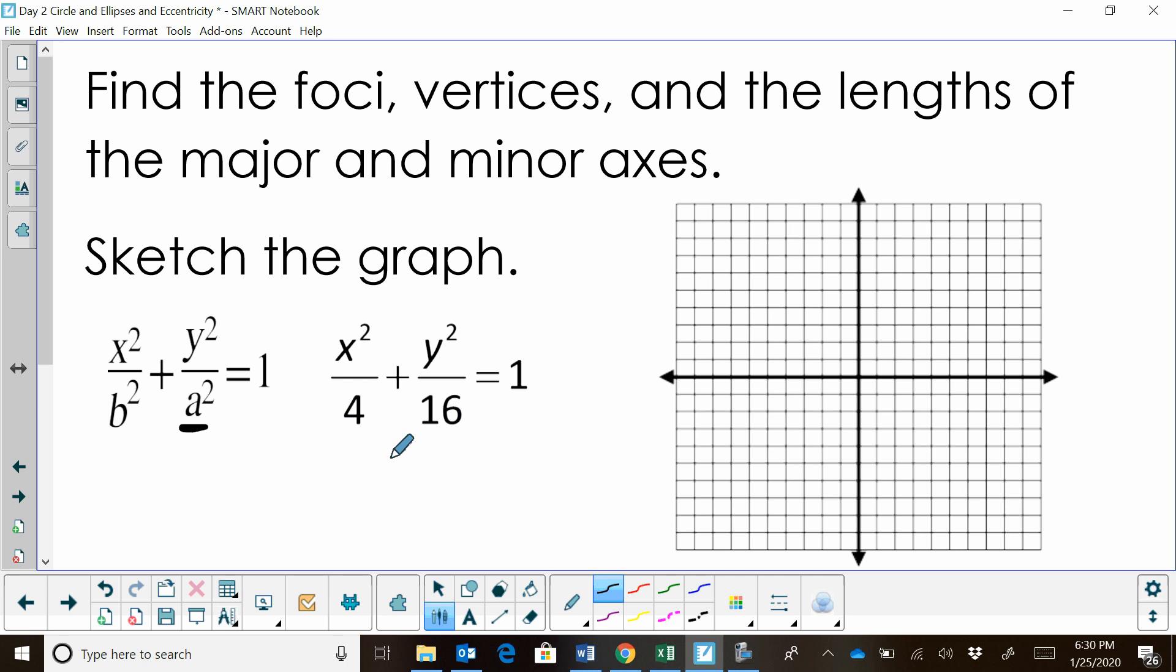One of these two denominators is a squared and one is b squared. a is always greater than b on an ellipse because the a value is half of the length of the major axis. So what I've got to do first is set my a and b squared to each one of these values and solve for a and b.